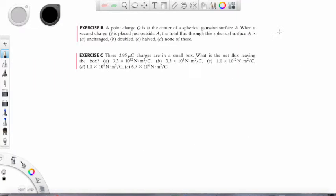As usual we had a couple of exercises in the book that needed to be answered. So first one exercise B. A point charge Q is at the center of a spherical Gaussian surface A. The second charge is placed outside. The total flux through the spherical surface A is unchanged, doubled, halved, or none of these.